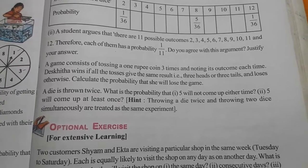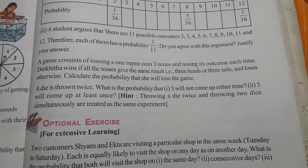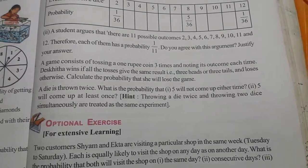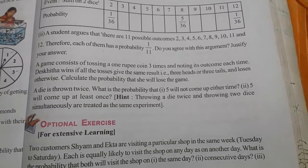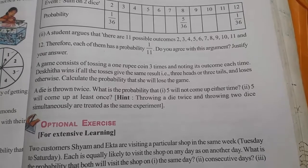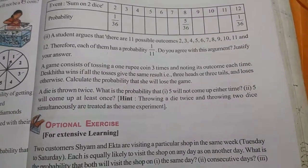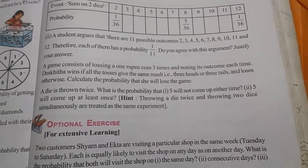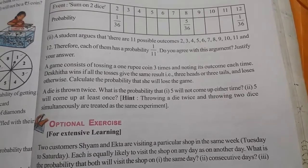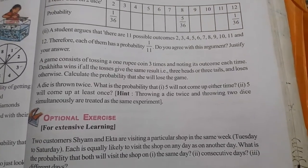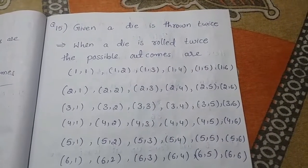Question number 15, page number 321, probability exercise 13.2. A die is thrown twice. What is the probability that: first, 5 will not come up either time; second, 5 will come up at least once. Hint: throwing a die twice and throwing two dice simultaneously are treated as the same experiment.